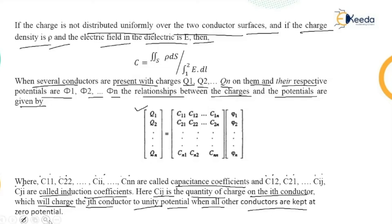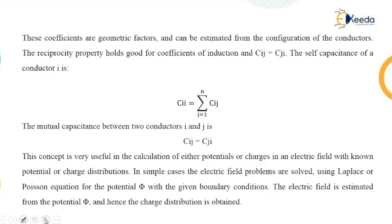These coefficients are geometric factors and can be estimated from the configurations of the conductors. The reciprocity property holds good for coefficients of induction: Cᵢⱼ = Cⱼᵢ. The self-capacitance of conductor i is Cᵢᵢ = Σⱼ₌₁ⁿ Cᵢⱼ. The mutual capacitance between two conductors i and j is Cᵢⱼ = Cⱼᵢ.